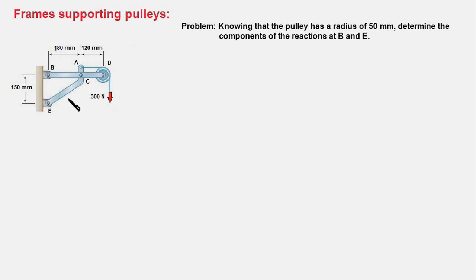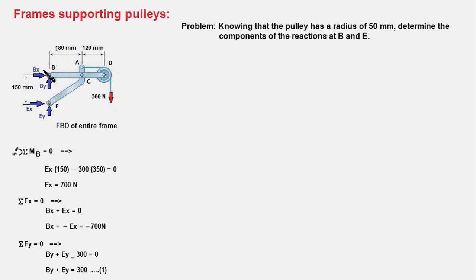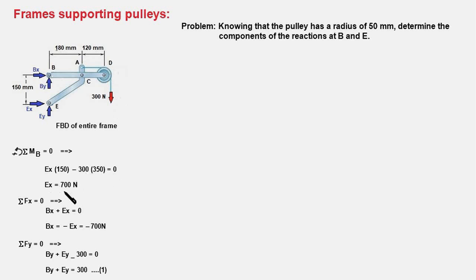The FBD of the entire frame looks like this — four unknowns, three equilibrium equations. We first take the moment of all forces about point B, which eliminates two forces. EY is also eliminated since it passes through point B, leaving a single unknown EX in the equation. EX times 150 minus 300 times the distance — which is 180 plus 120 plus the pulley radius of 50 mm — gives 300 times 350. Solving this equation, we get EX as 700 newtons.